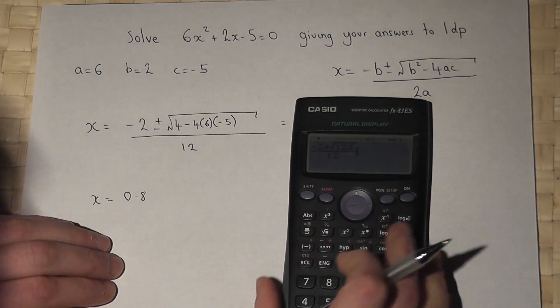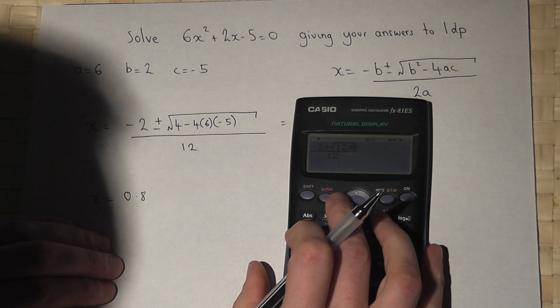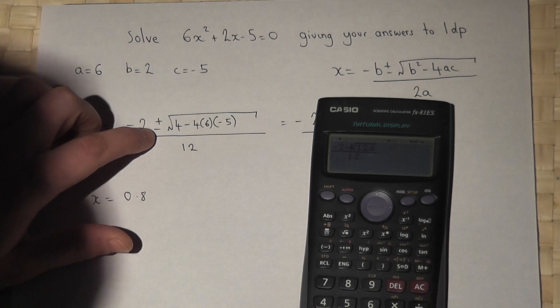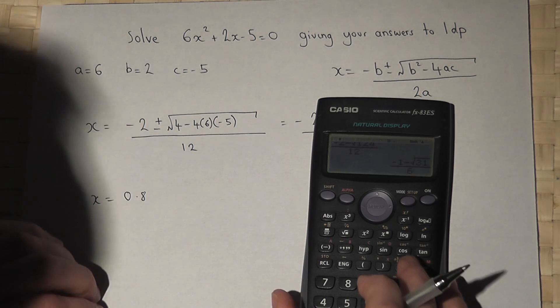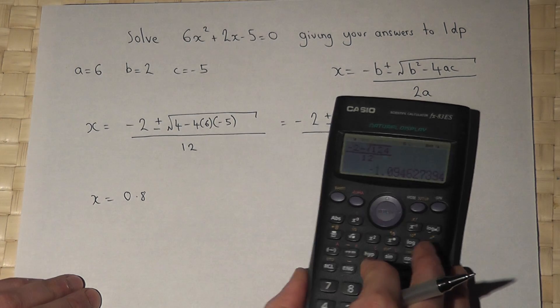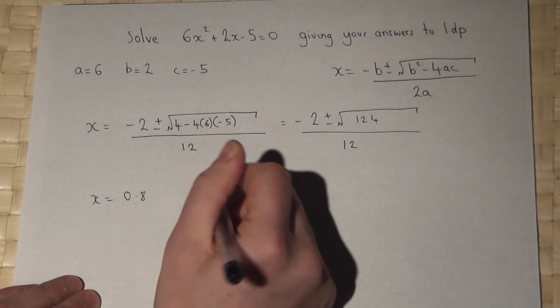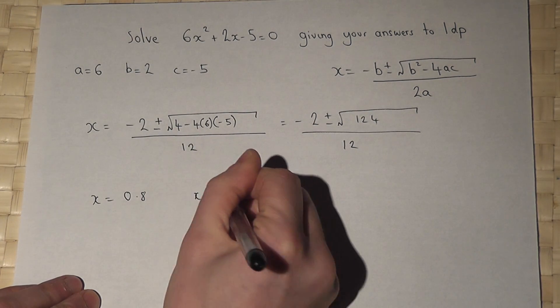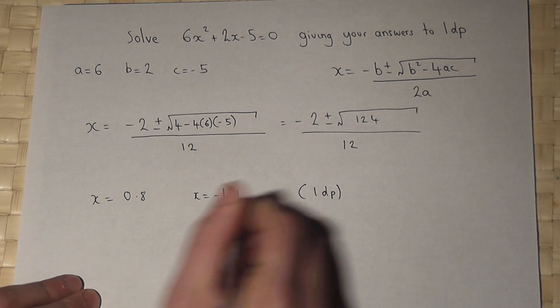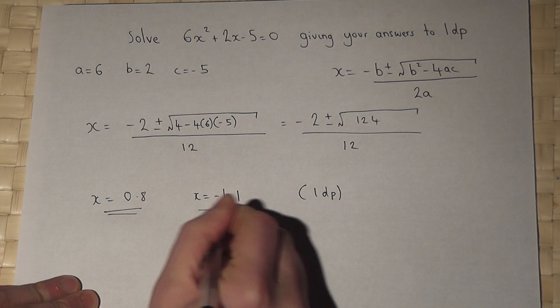For our second solution, we change the plus to a minus, press enter, and this solution is minus 1.0 to 1dp. So there are our two solutions.